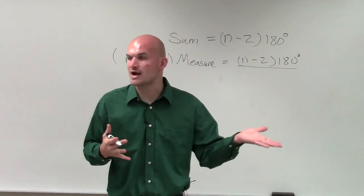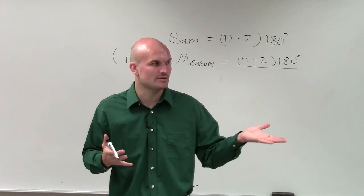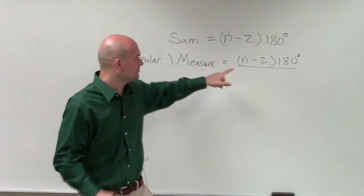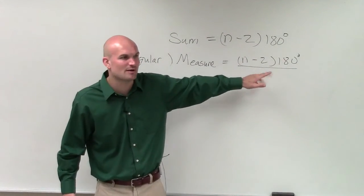It always depends. If it's a triangle, we divided it by 3. If it was a quadrilateral, we divided it by 4. A pentagon, we divided it by 5. So what do we have? What letter do we represent with the number of sides?